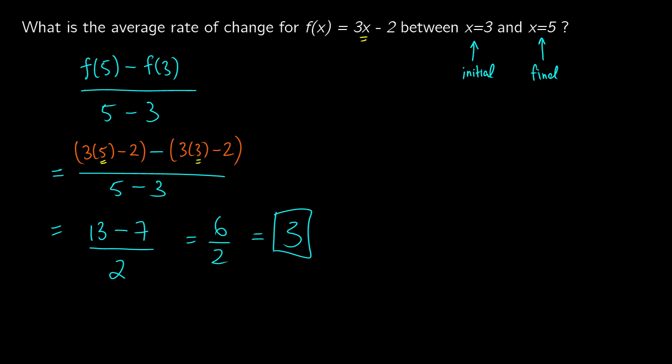This is a function with no units, so we don't need to specify any. One interesting thing you can see here — which can be helpful for linear functions — is that this number simply corresponds to the coefficient of x. So whenever you have a formula like mx plus b, the average rate of change over any time period is usually just m. You should verify this for yourself with several different problems. It's still good to show all your work, but that's a helpful hint.